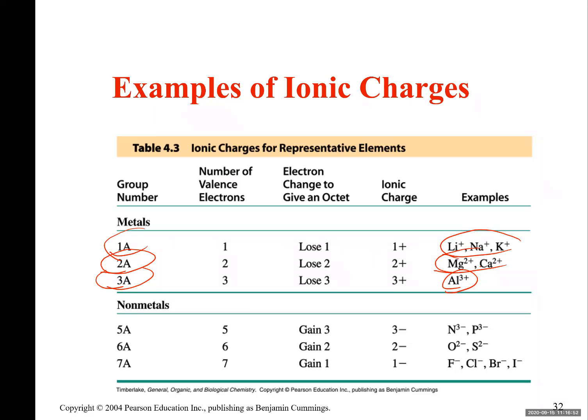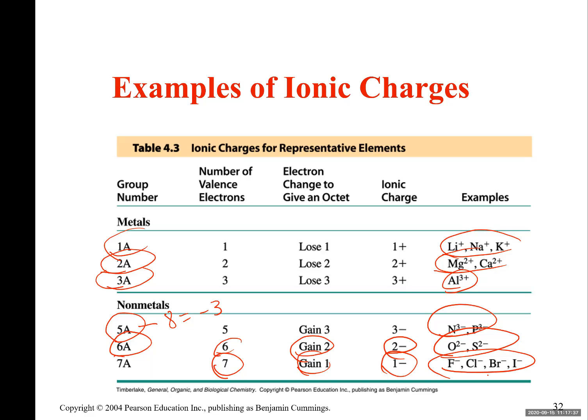You can also predict the charges of non-metals by looking at periodic table. Look at the column number 5A. You have to write 5 minus 8, so negative 3. See the charges of nitrogen and phosphorus, which are in group 5A, are negative 3. If it is oxygen, which is in group 6A, it really has six valence electrons. It needs two more to become 8. So the charge is going to be negative 2. If a non-metal is in group 7A, it has seven valence electrons. It needs one more electron to become 8. So the charge is negative 1.